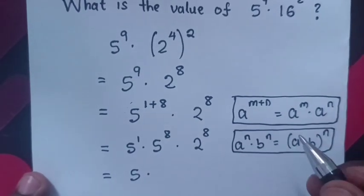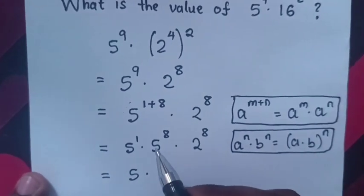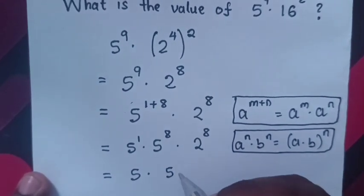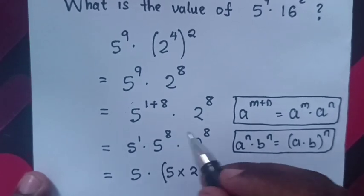So here it will be 5 times (5 times 2)^8.